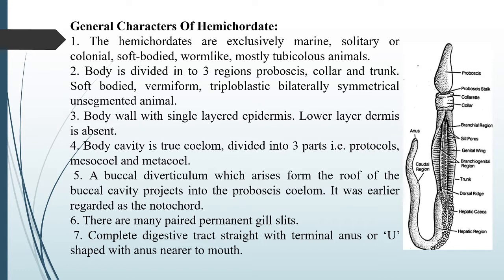The next characteristic is that a true coelom (body cavity) is present, found in all three body parts — the proboscis, collar, and trunk region — but only in the larval (embryonic) stage, not in the adult. The coelom has three parts: the coelom in the proboscis is called the protocoel, in the collar the mesocoel, and in the trunk the metacoel.